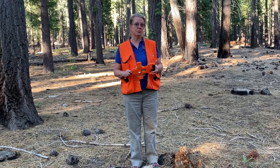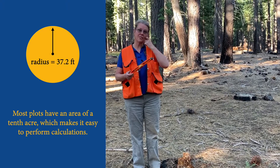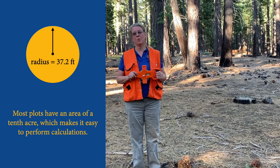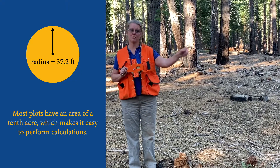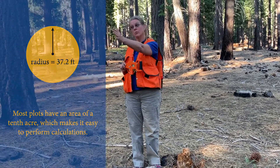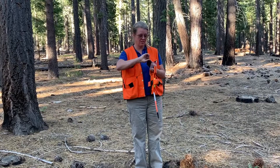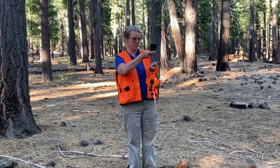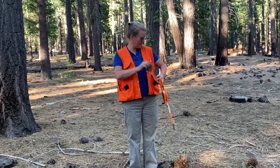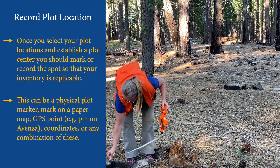A common size of a plot is a tenth of an acre. What I'm going to do is lay out this tape 37.2 feet along from a plot center — that makes it a radius — and then in our mind, we'll describe a tenth-acre circular plot. First, I'm going to figure out which way north is so that I will lay out my tape to the north, and then walk on that bearing 37.2 feet.